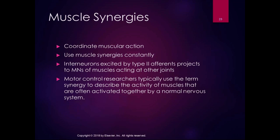Muscle synergies are coordinated muscle action — we use them all the time. When we eat, we need finger flexion and elbow flexion combining with supination of the forearm to bring food to our mouth. There are spinal interneurons excited by type 2 afferents projecting to the motor neurons of muscles acting at other joints, providing constant feedback and feed-forward control of movement.